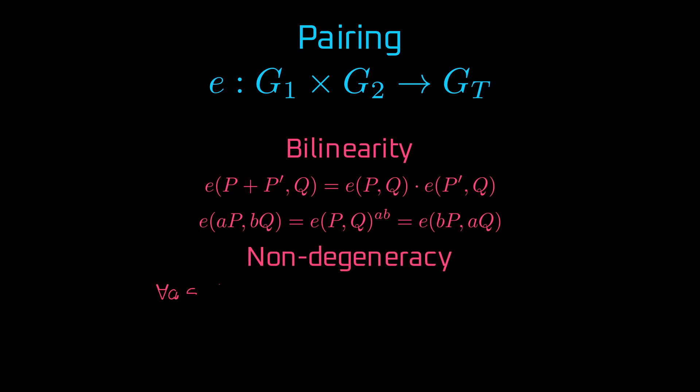The non-degeneracy condition makes sure that the solution isn't trivial. That is, if you put non-zero elements from groups G1 and G2, you should not get the identity element, one. And finally, the computability condition sees that the operation is efficient.